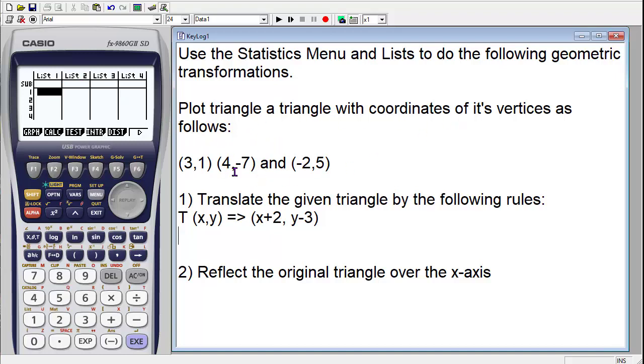We have a triangle with three vertices. You can use the subheadings to identify each list. To label this as x, notice the red x above the plus sign, which is the alphabet key. Choose the red alpha key, hit the plus sign, then execute. Now list 1 is identified as x values. Do the same for y using alpha and the subtract button, then execute. Now I've identified what each list represents.